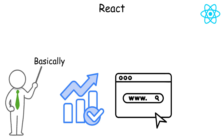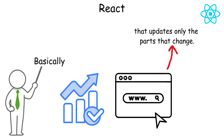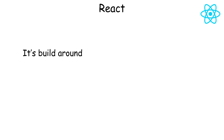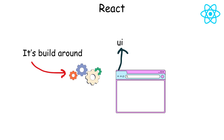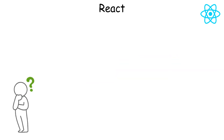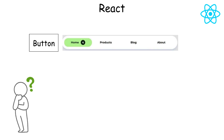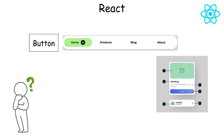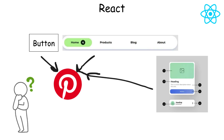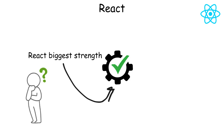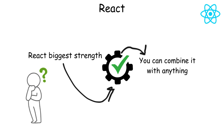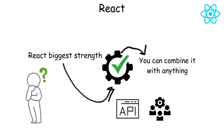React is built around components — little building blocks of UI that you can reuse everywhere. Think of each button, nav bar, or card as its own mini app with its own logic and style. React's biggest strength is flexibility; you can combine it with anything: backend APIs, state managers like Redux or Zustand, and even frameworks like Next.js for server-side rendering.